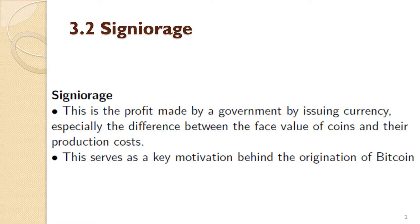The first thing to go through here is seigniorage. If you're asked to define what a national currency is, you could view it at least in part as just the tokens you pay your national taxes in. With that loose definition in mind, seigniorage is the profit made by a government by issuing currency — especially the difference between the face value of coins and their production costs. This serves as an important key motivation behind the origination of Bitcoin.